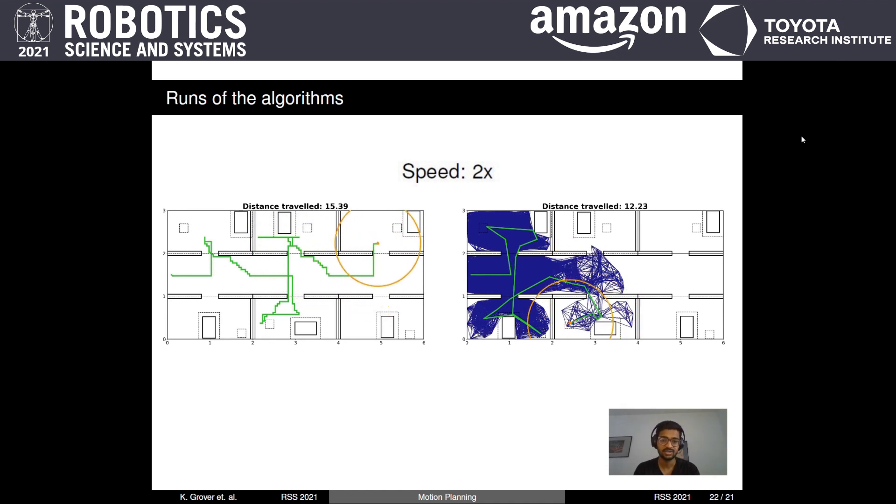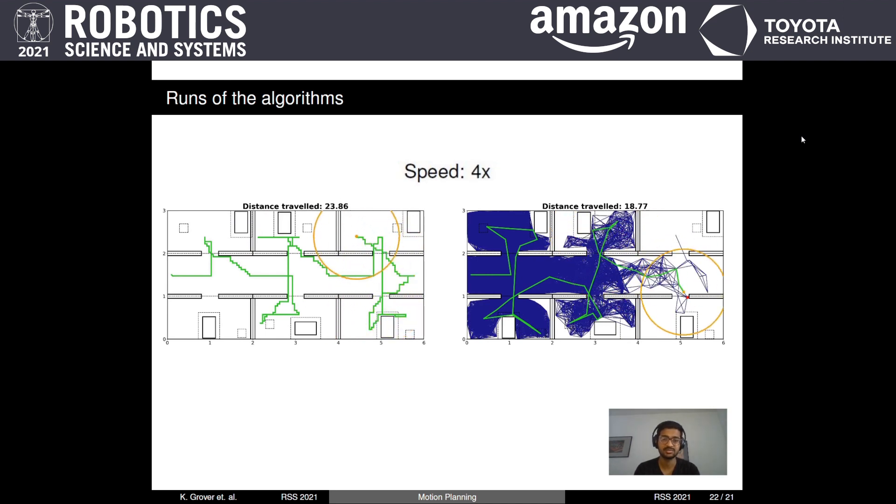On the right side, a run of our approach is shown and we can see that after finding the first bin, the robot now visits other bins a lot sooner.